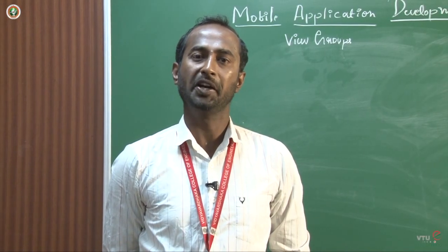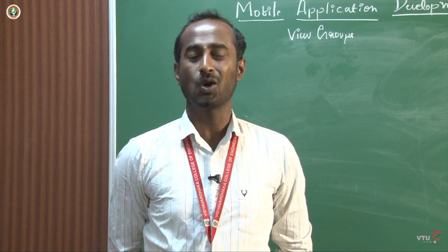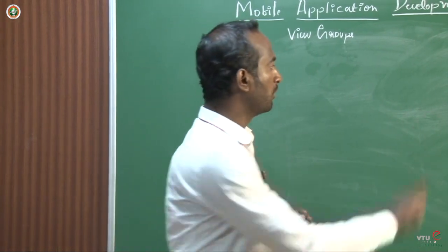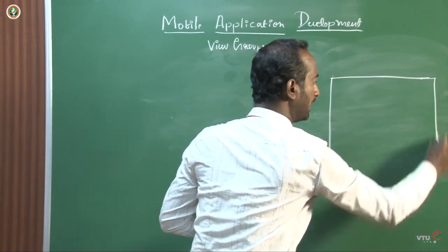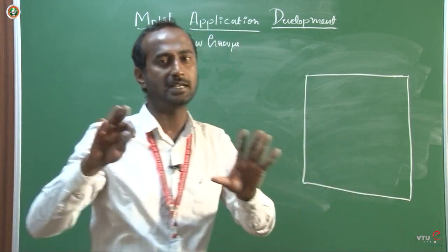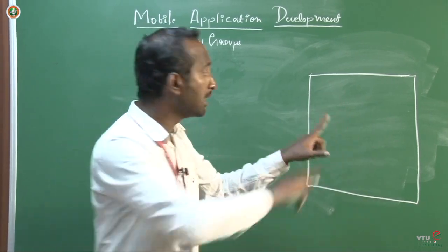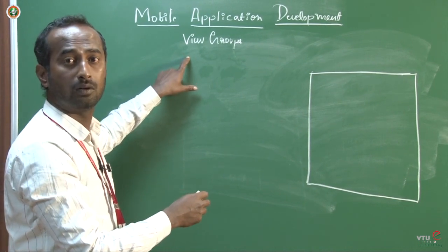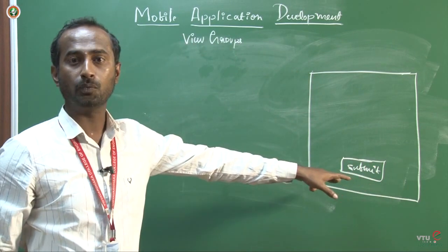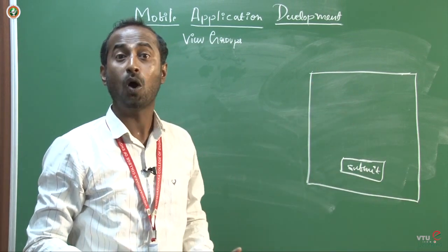Hello everyone, welcome back to the V2E section of the program. In this lecture on mobile application development, I will be explaining view groups. You must understand the difference between view and view group. A view group defines how the components — whether buttons, input components, or output components — are displayed on the screen. A view means a component, and how they are grouped in a particular activity is called a view group.